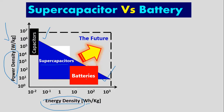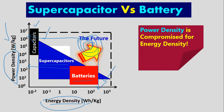We need both large energy density and high power density. If we go for high power density, we are compromising energy density. But if we go for high energy density, we are compromising power density. This is the problem, and the future goal is basically to reach a point where we have both high energy density and high power density at the same time.